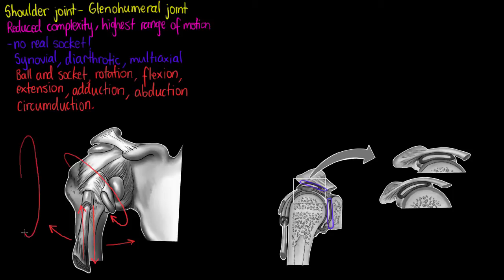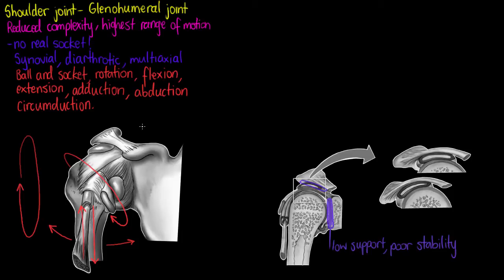So we are going to see that when it comes to range of motion, your shoulder joint is an absolute powerhouse. Now if we look at the glenoid fossa, we will see that it only contributes a small amount of support to the overall size of the head of the humerus. This results in it being somewhat poor in terms of joint stability, but it's one of the features that allows that increased range of motion — low support, poor stability, but increased range of motion.